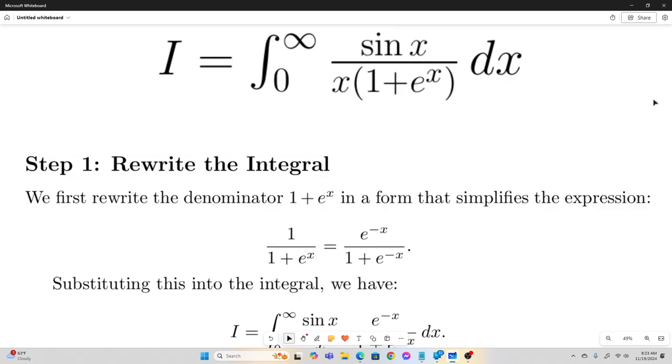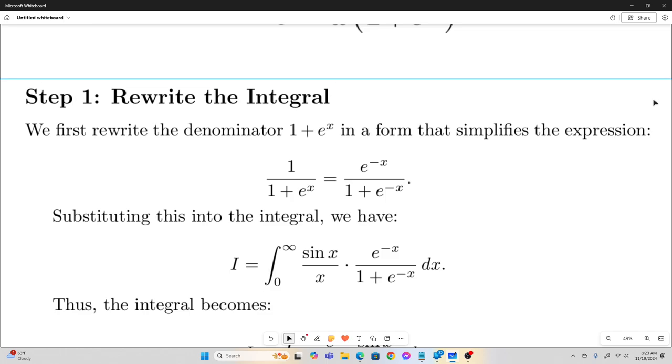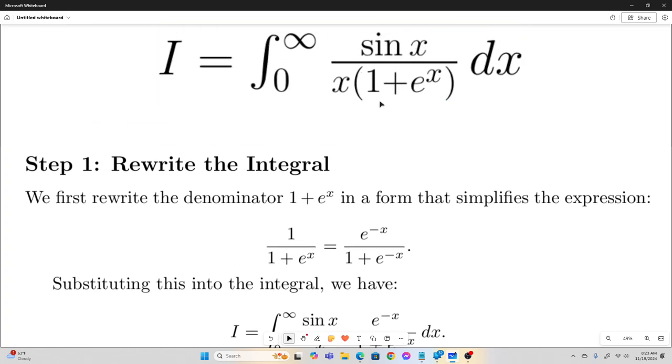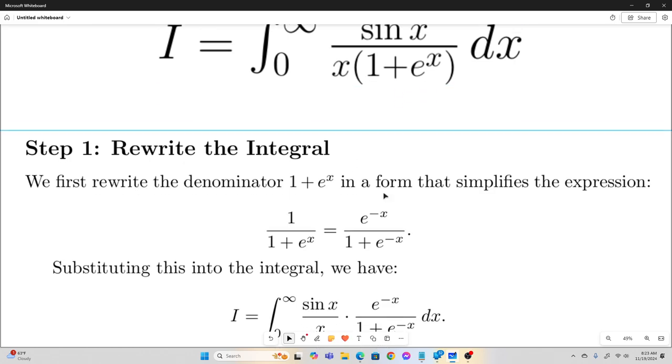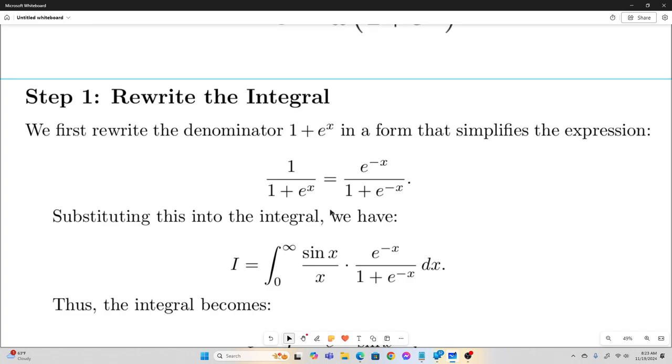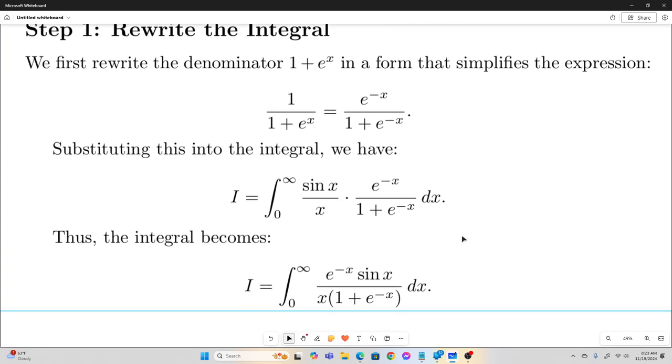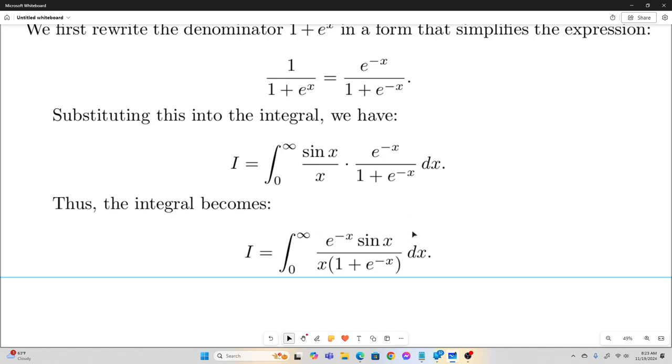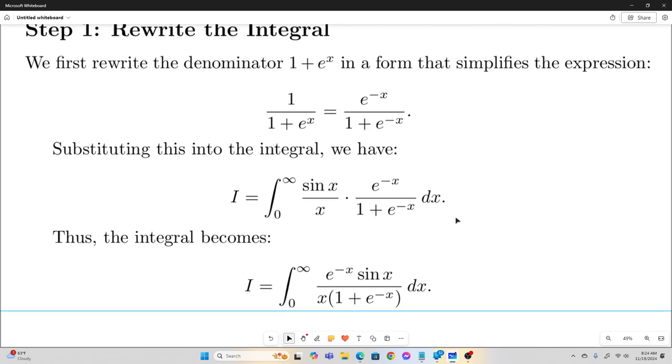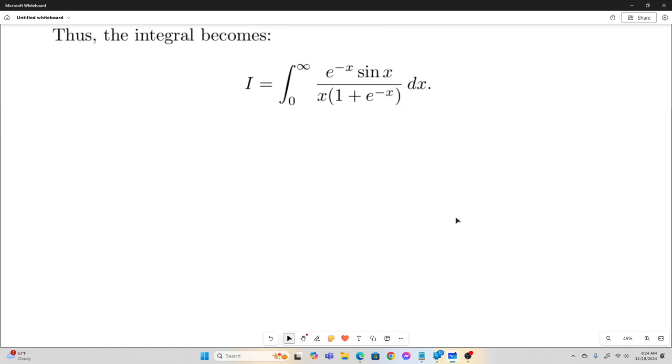Alright, so the first step is to rewrite the integral. Basically what we're doing is multiplying the top and the bottom of this 1 over 1 plus e to the x times e to the negative x, and that's going to give us this. And I did that so that our infinite series would converge at a later point. So our original integral I is now equal to the integral from 0 to infinity of e to the negative x sine x over x times quantity 1 plus e to the negative x dx.